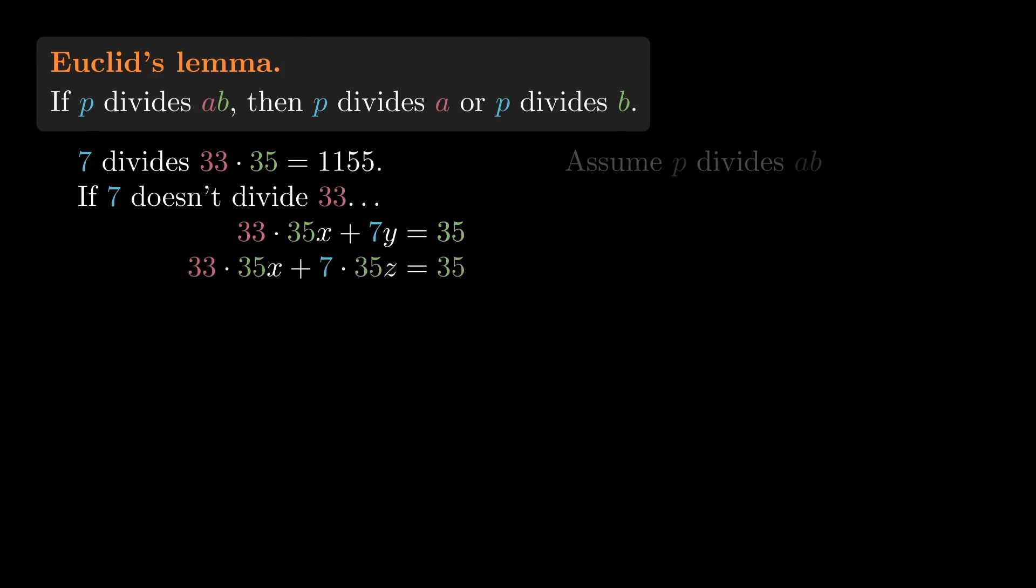Well, there's a 35 in all three terms, so if we divide by 35, this simplifies the equation. And if we can find x and z to make this equation work, then it will also make the previous equation work. So can we find x and z?